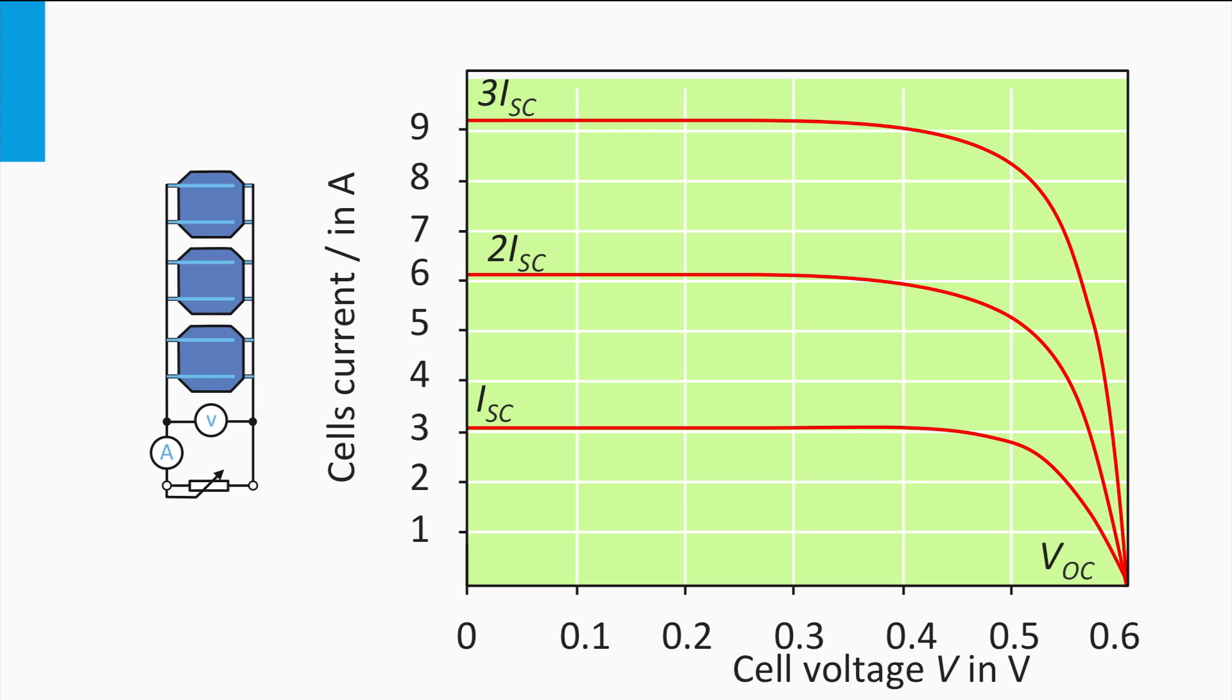If we have two solar cells connected in parallel, the current increases two times, whereas the voltage remains the same. If we have three cells in parallel, the current becomes three times as large, while the voltage is the same as for a single cell.